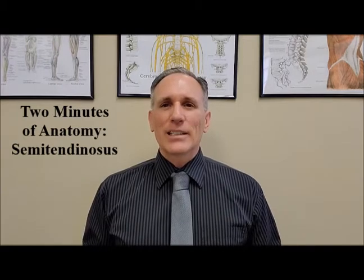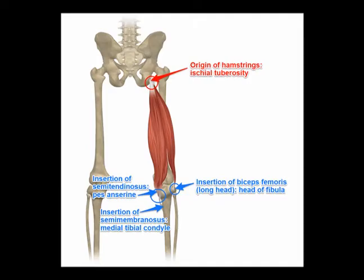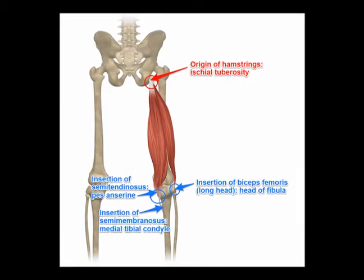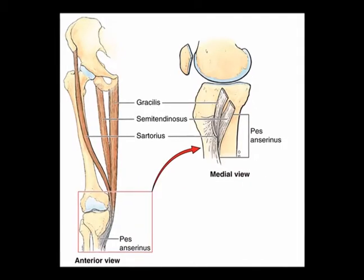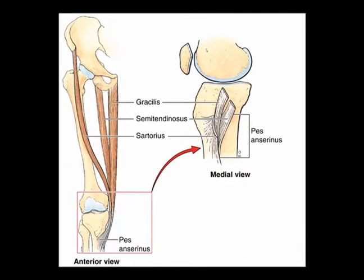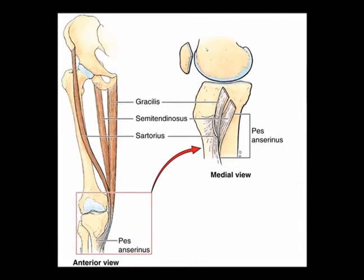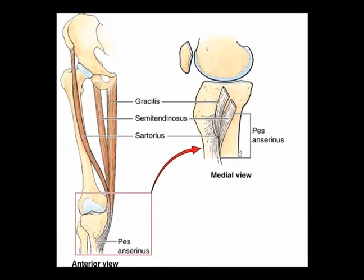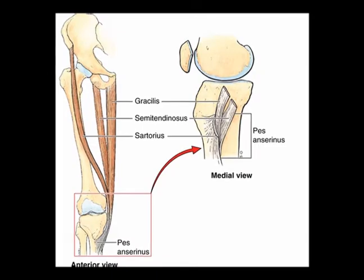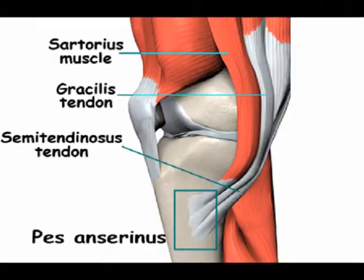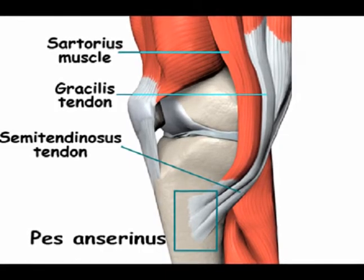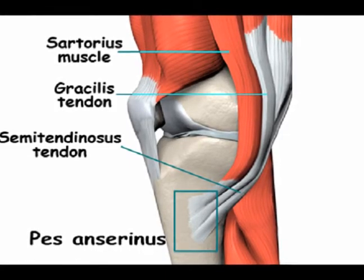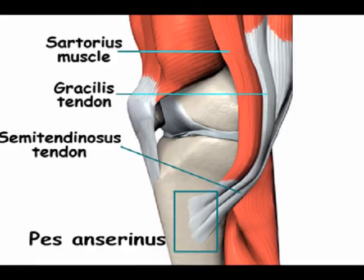The semitendinosus muscle is part of the hamstrings muscle group. The semitendinosus muscle attaches to the superior medial tibia at the pes anserine, along with the attachments for the sartorius muscle and the gracilis muscle.